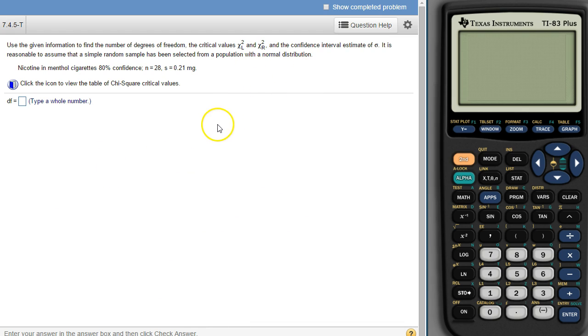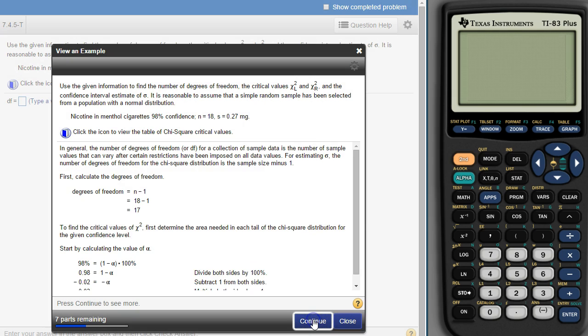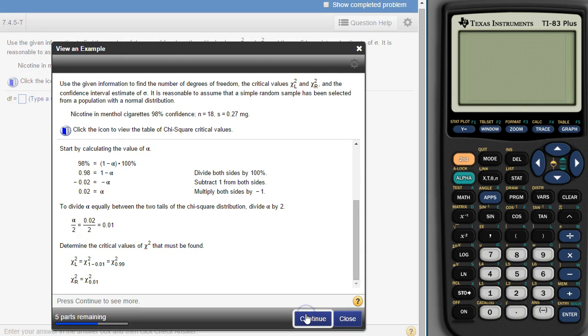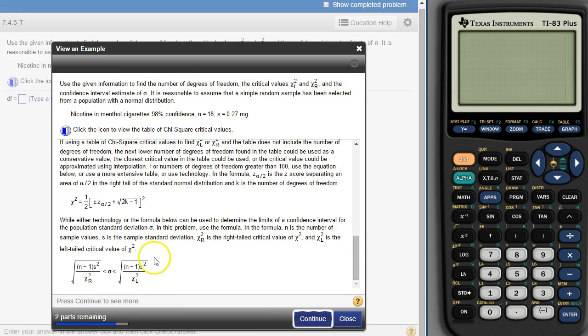Two things you can do to make your life easier here: one is use StatCrunch, the other is if you do use the TI calculator, go ahead and when you click this view an example, jot down this formula right here. This is the one we'll need, okay, so I want to grab that one and put it in our work. If we're going to use StatCrunch you can actually bypass this.